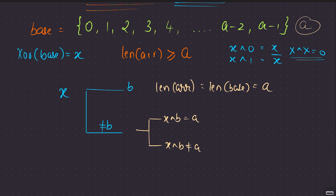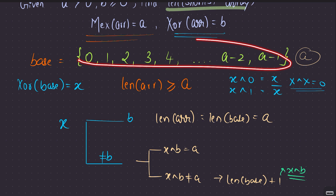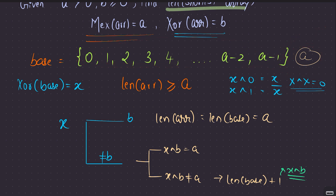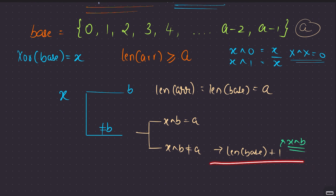If X XOR b is not equal to a, your answer is simply a plus 1. The plus 1 accounts for adding the element X XOR b. Now the XOR has become b, and the MEX value is still a, because whatever this value is, it's definitely not a.